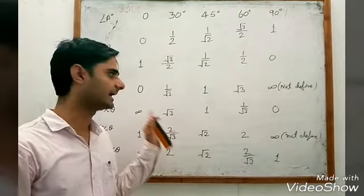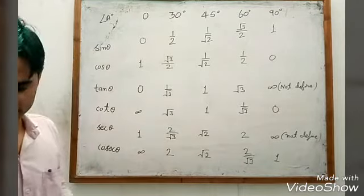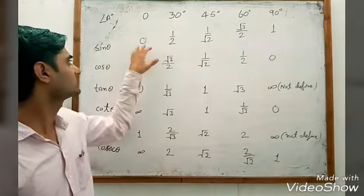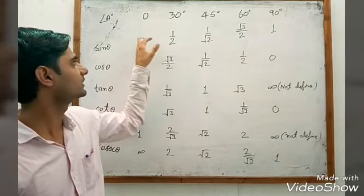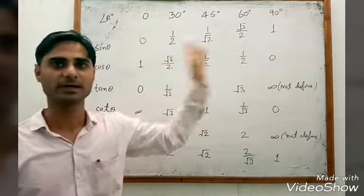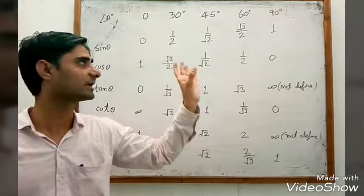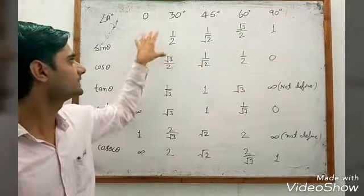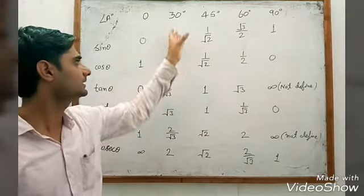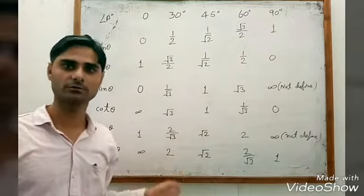This is the way to make the table. No need to memorize — just write 0, 1, 2, 3, 4; divide by 4 everywhere; take square root; and then derive the rest of the rows similarly.